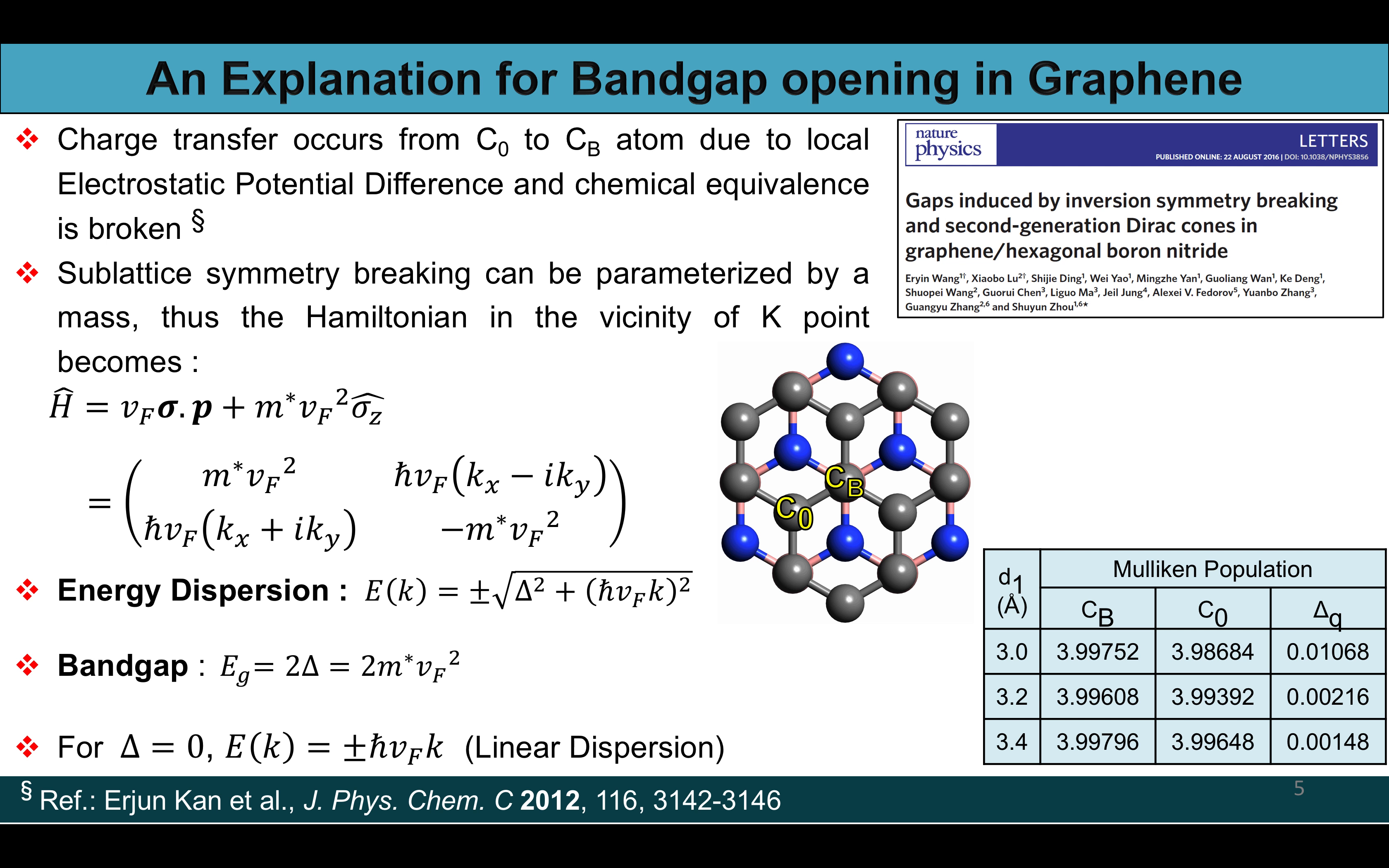It can be quantified using the Mulliken population analysis as shown in the table. Here delta Q is the net charge transfer per atom and it is clearly visible that the charge transfer is more prominent when d1 decreases.